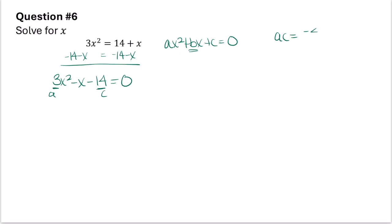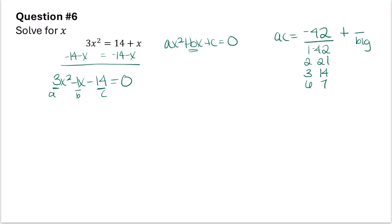Since 42 is negative I need a positive and a negative factor. My middle term b is negative 1 so the bigger factor will be negative. Listing the factors: 1 and 42, 2 and 21, 3 and 14, and 6 and 7. Making the bigger factors negative, the correct combination that adds up to negative 1 is 6 and negative 7. So this becomes 3x squared plus 6x minus 7x minus 14 equals 0.